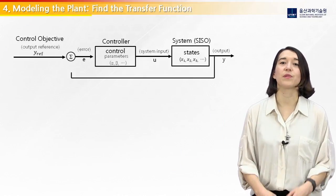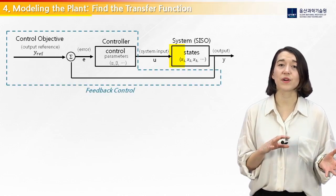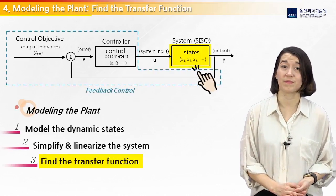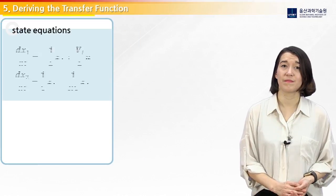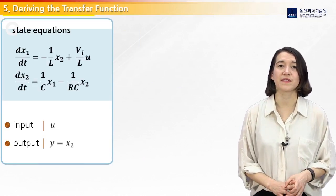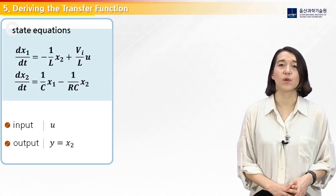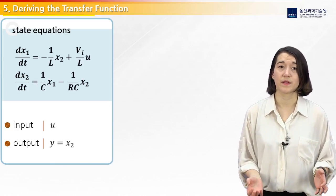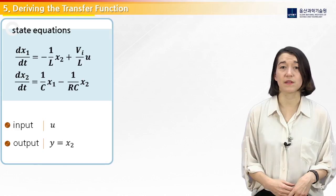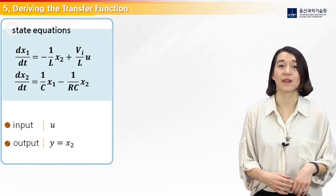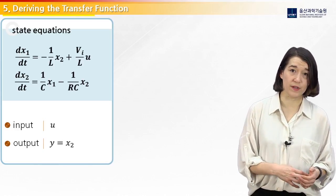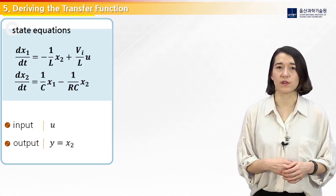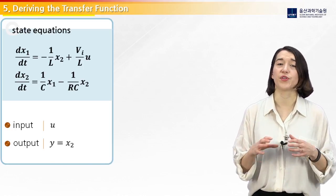Finally, we move to the third step, which is rearranging the linear system equations to determine the transfer function. To find the transfer function from these state equations, we have to take the Laplace transform and rearrange the terms. We know that our input is u and our output is state 2, which is the output voltage. So we need to find the equations for y over u.